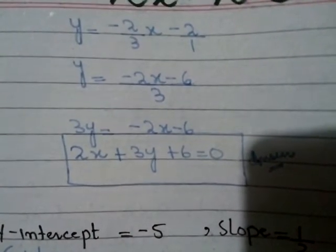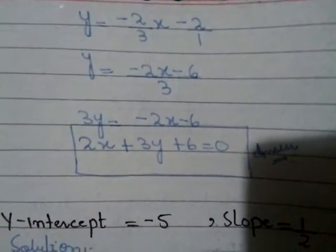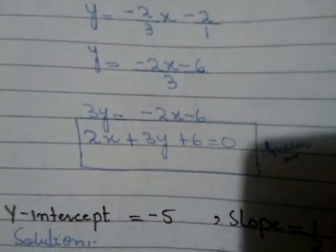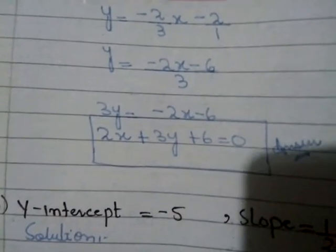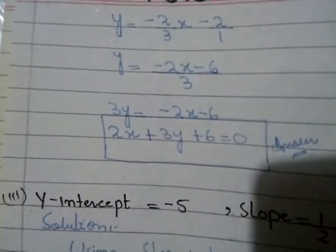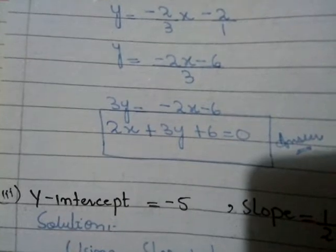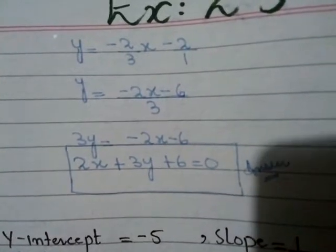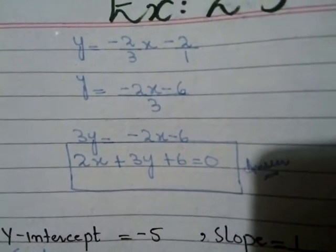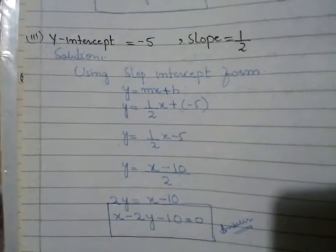LCM is 3, so multiply both sides by 3: 3y = −2x − 6. Rearranging, 2x + 3y + 6 = 0. This is our required equation of a straight line. Question number 3: y-intercept is equal to −5 and slope is equal to 1/2.